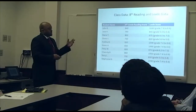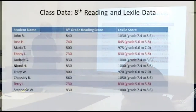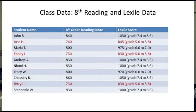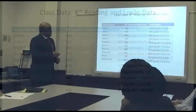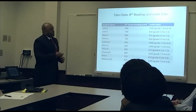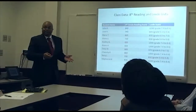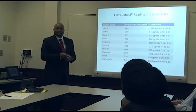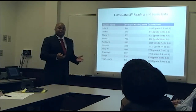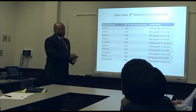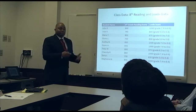Here's our second set of 10 students. John R. has an 840 reading score correlating to a 1030 Lexile. However, Ebony L. has a 730 reading score and an 830 Lexile, performing at a fifth grade level. We have a wide spectrum of student performance on the reading CRCT, as well as a spectrum of Lexile scores to consider when teaching these students.